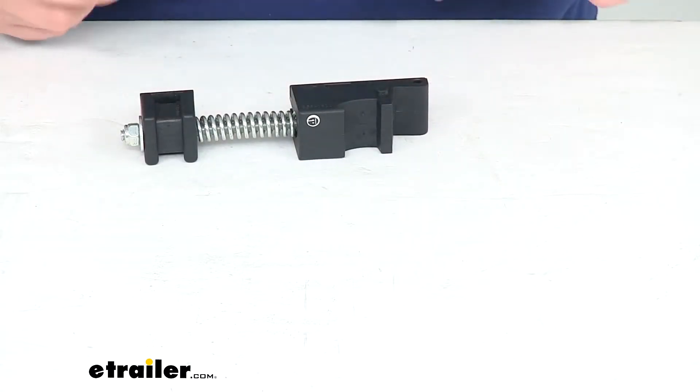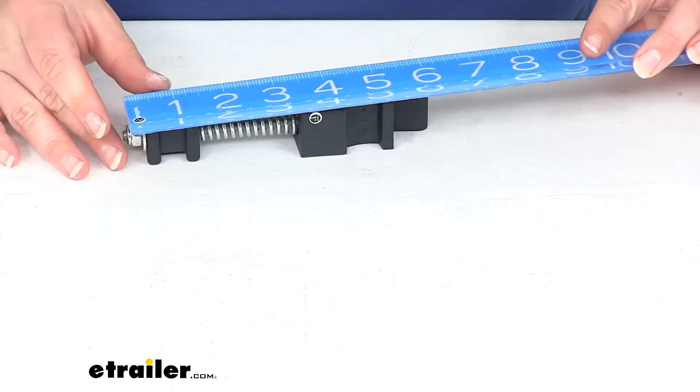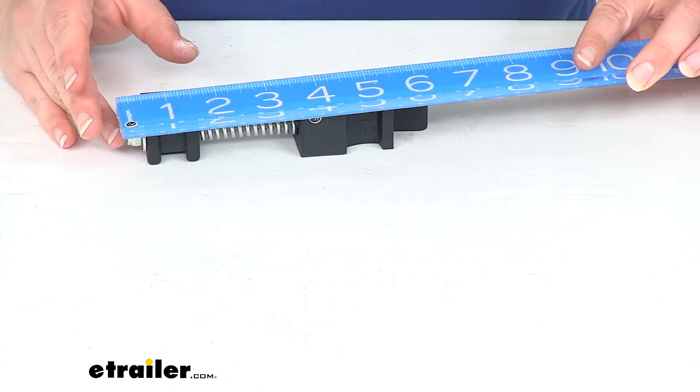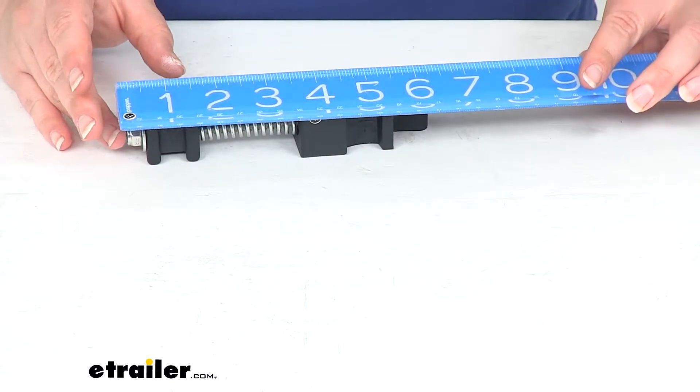Now, just for reference, to let you know how long this whole assembly is, going from the very end of the bolt to the very end of the bracket, it's about six and a half inches long.